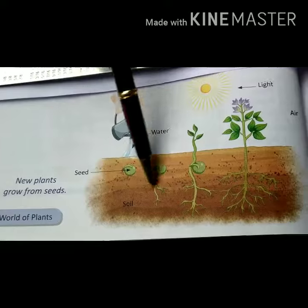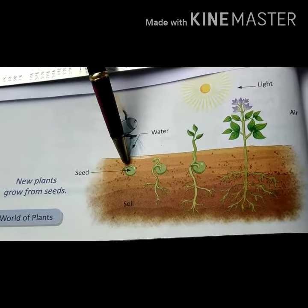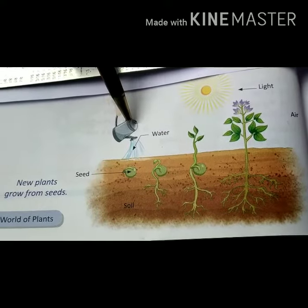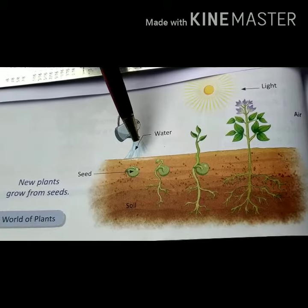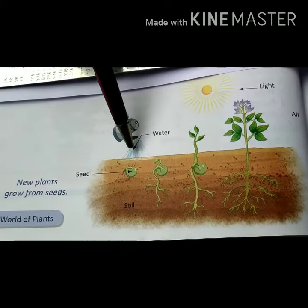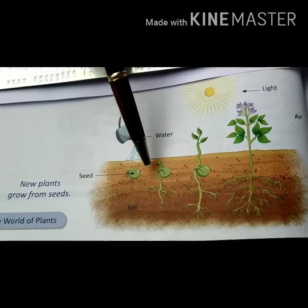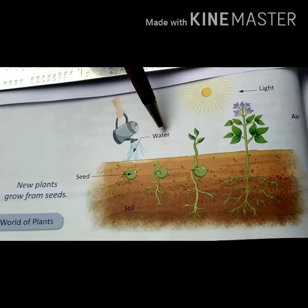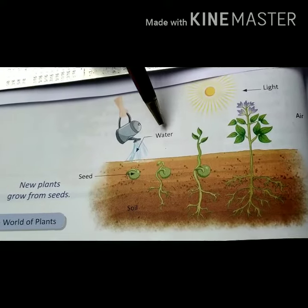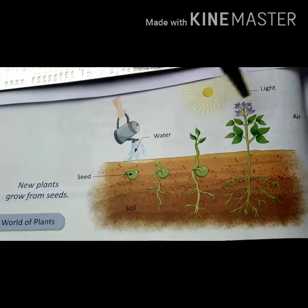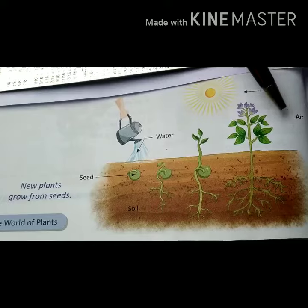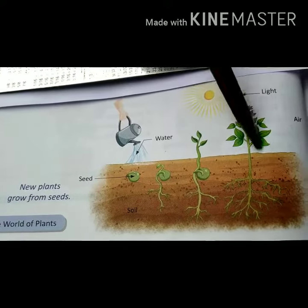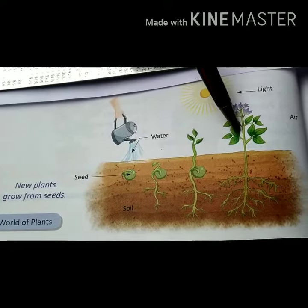Inside the soil, you can see the seed, and water is supplied to it. Slowly, from the seed, it starts to germinate. Enough light and air helps the seed to grow into a plant.